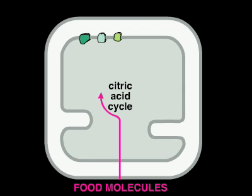In the citric acid cycle, the molecules are stripped of high-energy electrons, which are donated to carrier molecules, such as NADH.